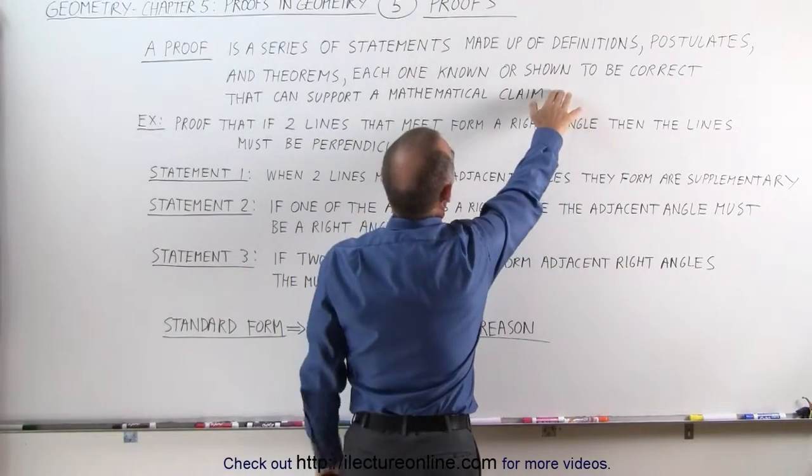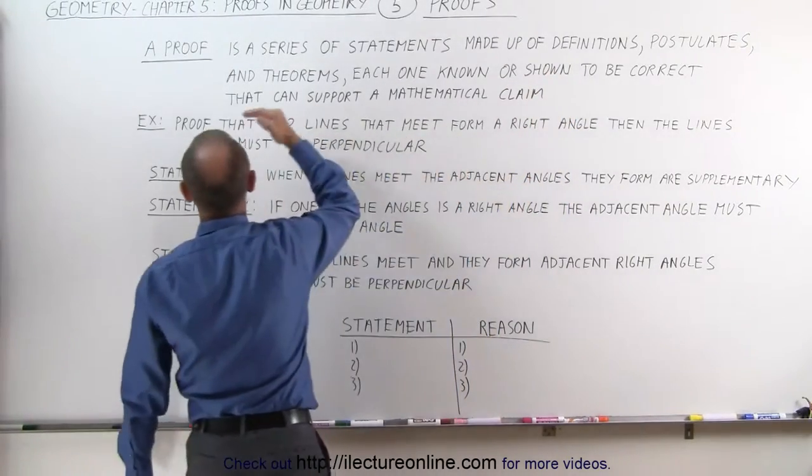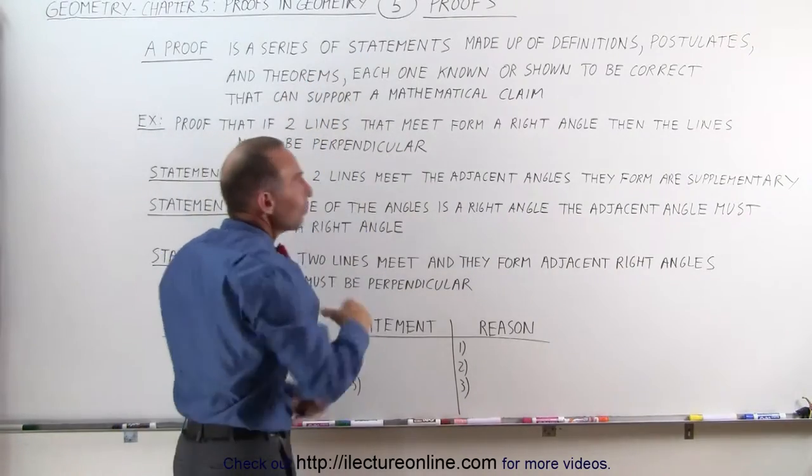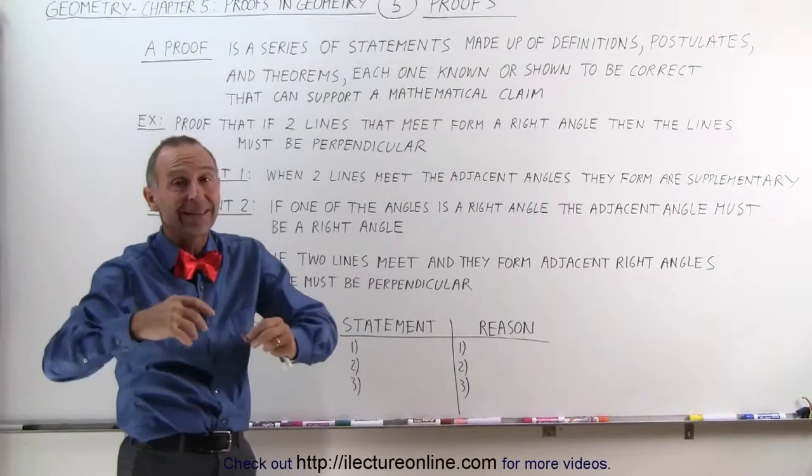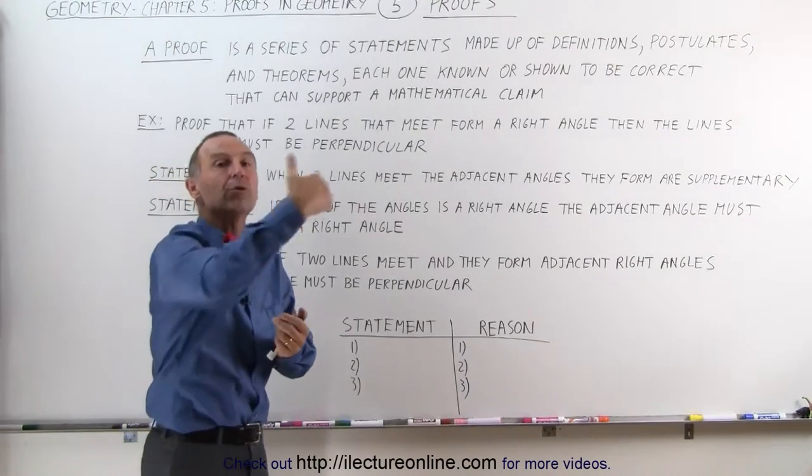Or, we need to show that they're correct. And, of course, that's when we get to theorems. The theorems need to be shown to be correct. Once we've shown a theorem to be correct, then we can use that theorem to prove other things.